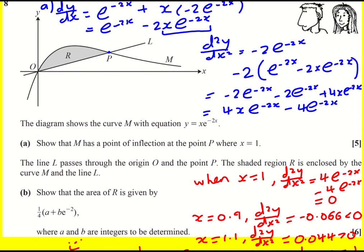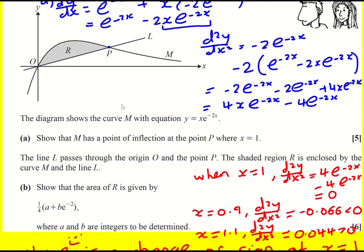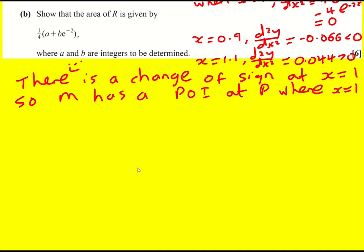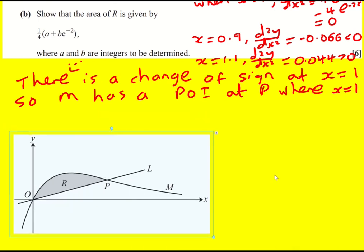So we're now told about the line that passes through O and the point P. And then this shaded region, we're asked to show that the area of the shaded region is given by this. Okay, and let's not forget our original curve was y equals x e to the minus 2x. So I'm going to need to do an integration from zero to one of this function. And we just showed the point of inflection was x equals one and that's where point P is.